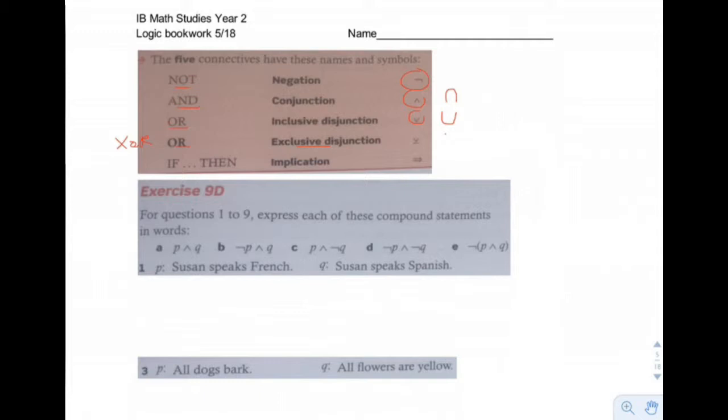And 'if-then' is when you combine two phrases together, and you express that with an arrow.